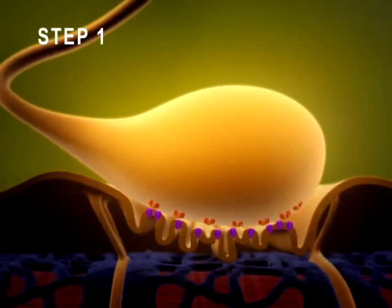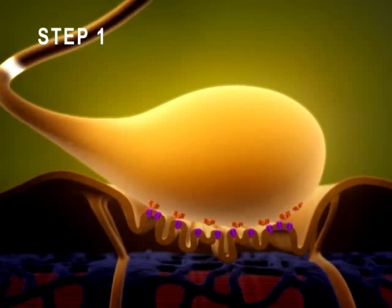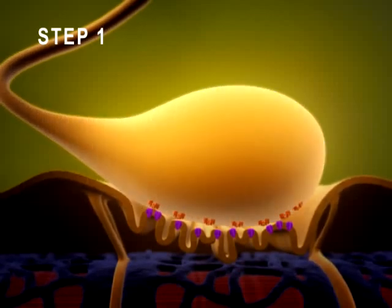Step 1. An action potential travels the length of the axon of a motor neuron to an axon terminal.